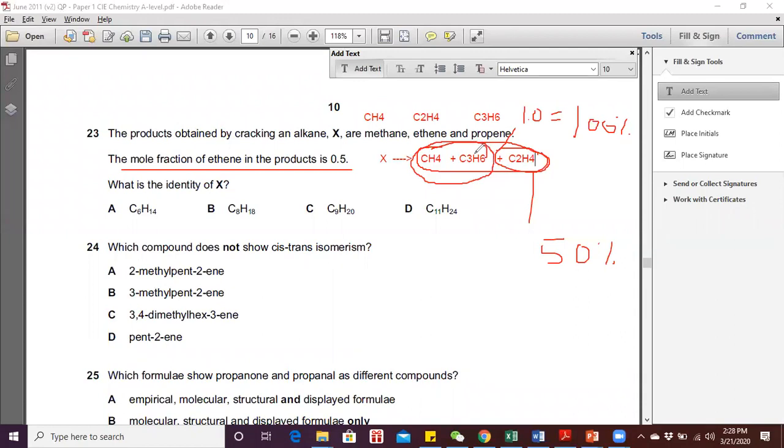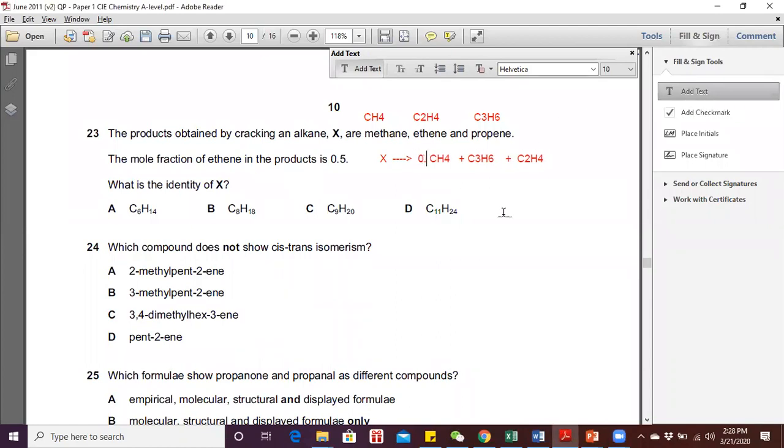25% converted back to mole fraction is 0.25 each. We're going to turn this fraction into number of moles: 0.25 mole of CH4 plus 0.25 mole of C3H6, and 0.5 mole for C2H4.